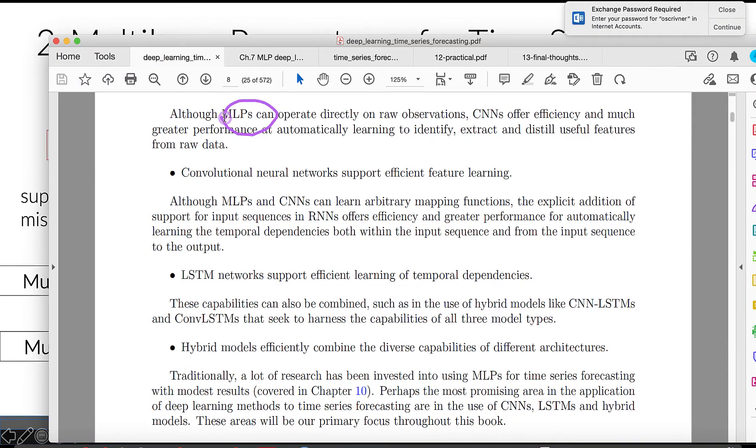Multi-layer perceptrons can operate directly on raw observations. The more complex models, like convolutional neural networks, are more efficient in terms of automatization for learning to identify and extract useful features. Long short-term memory networks also support efficient learning of temporal neural dependencies.